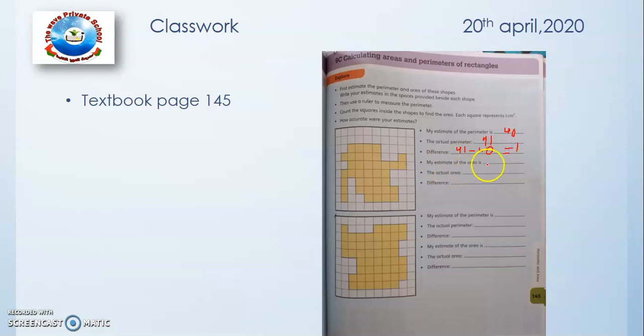Now I need to estimate the area. For area, I need to count all the boxes: 1, 2, 3, 4, 5, 6, all. But before this, I have to estimate. I think it is 38. And after counting, let's see how much it is.